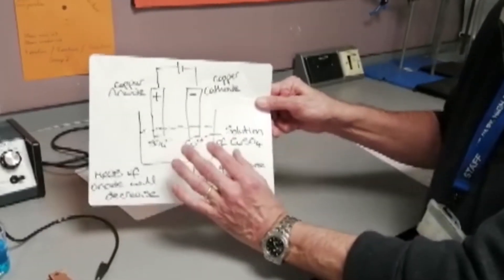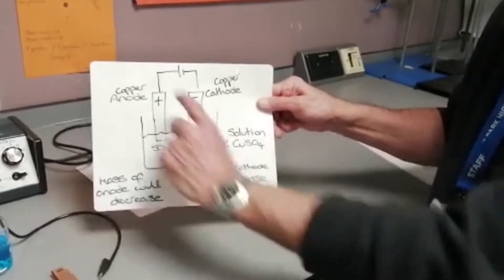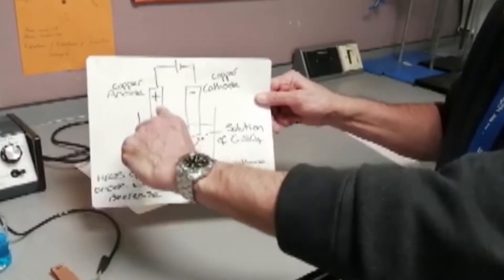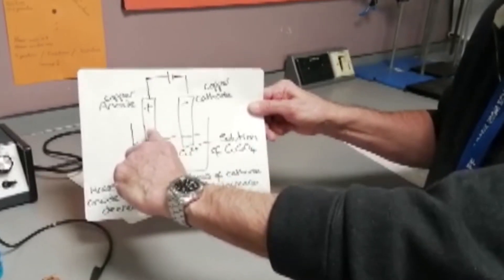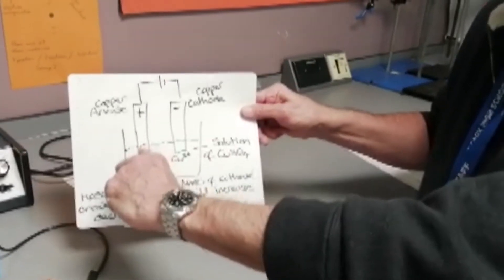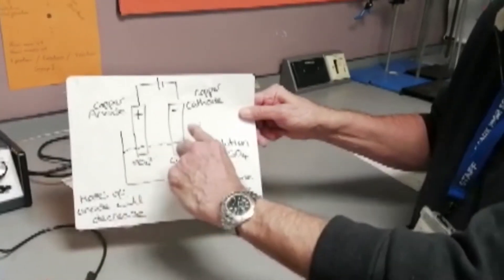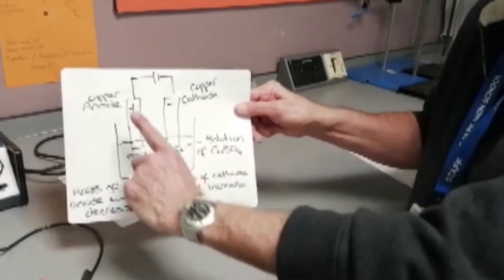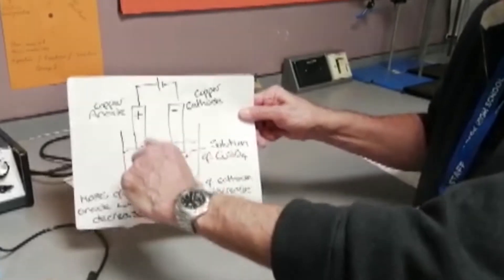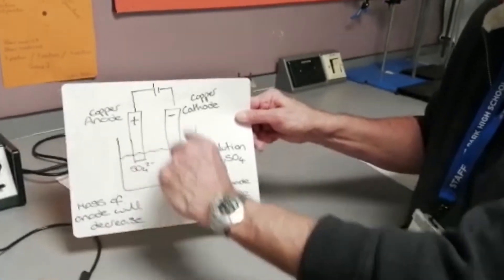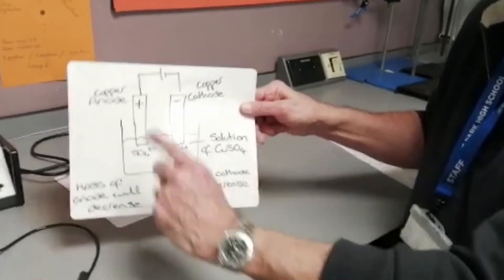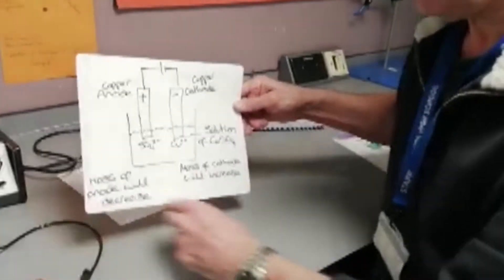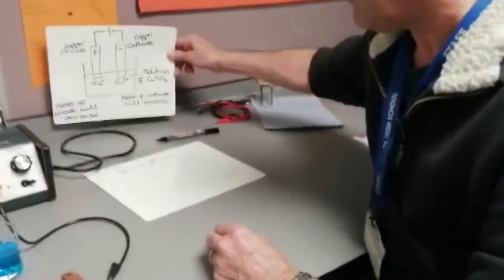So what we should see happen is that as copper leaves the anode and gets transferred to the cathode, the copper anode should get lighter, and the cathode should get heavier. I'm going to set this up now and see if that occurs.